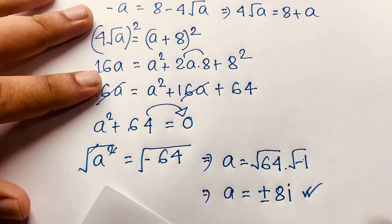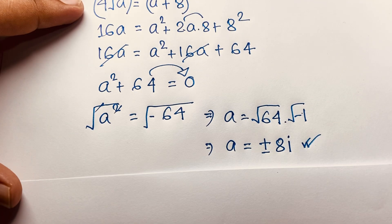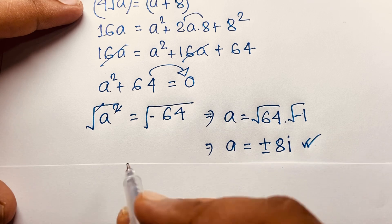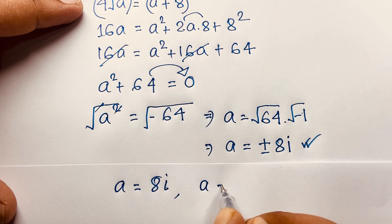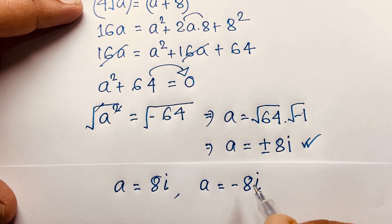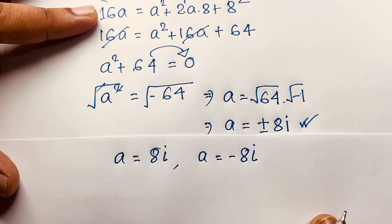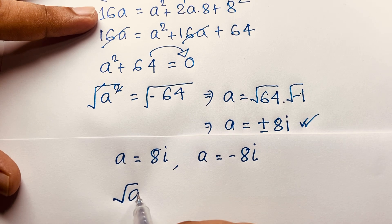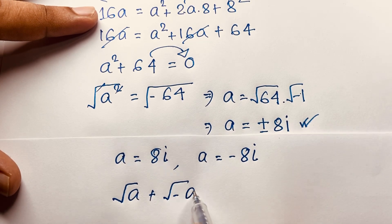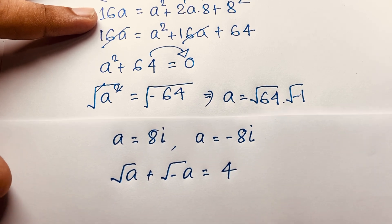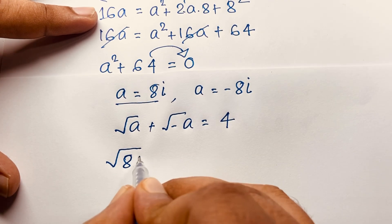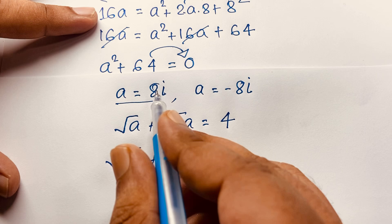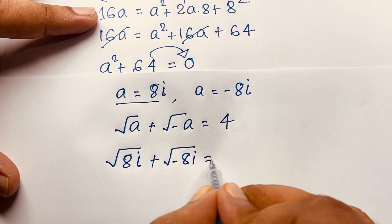Let's verify. We find A equals positive 8i or A equals negative 8i. We will verify for A equals 8i. Our question is: square root A plus square root minus A equals 4. We put this value in: square root of 8i plus square root of negative 8i is equal to 4.